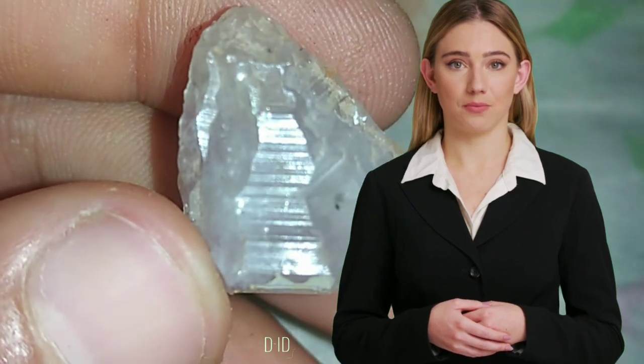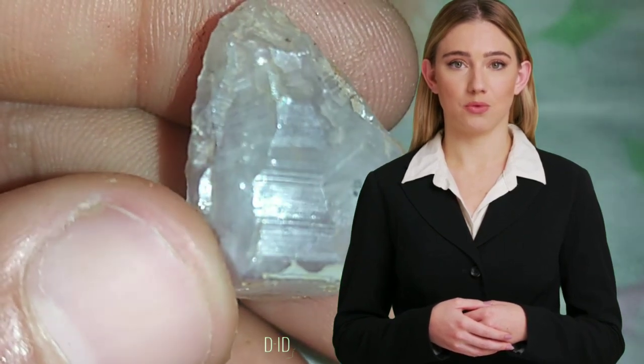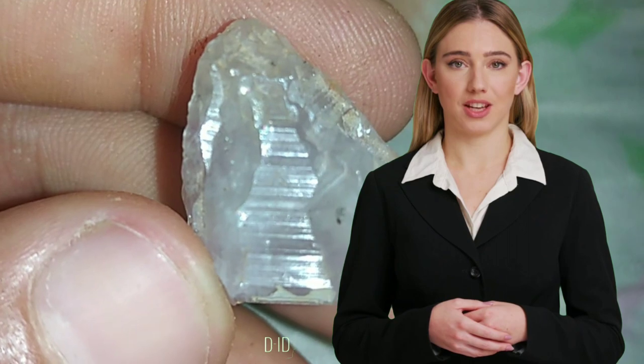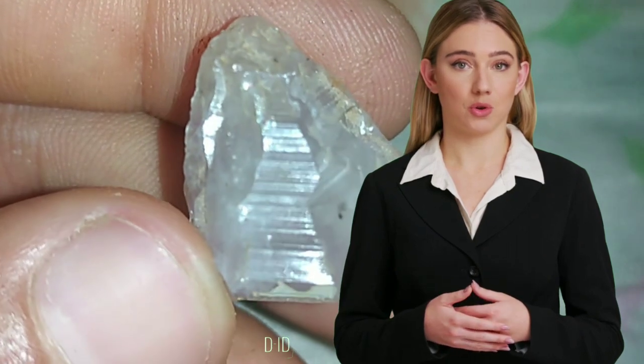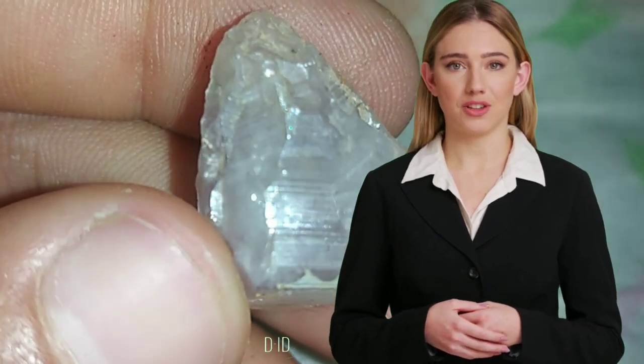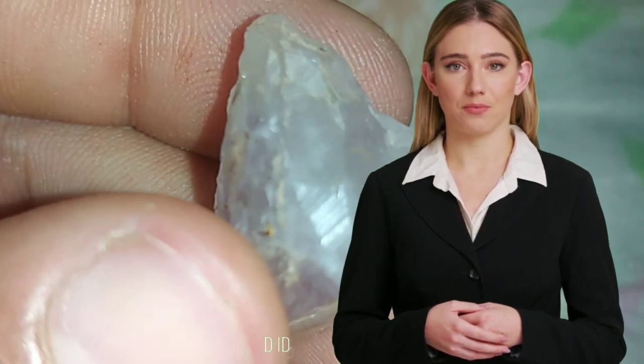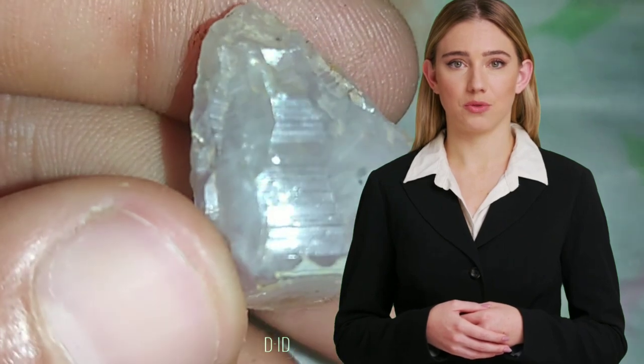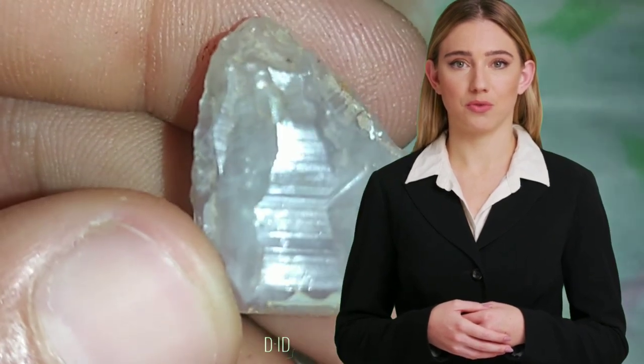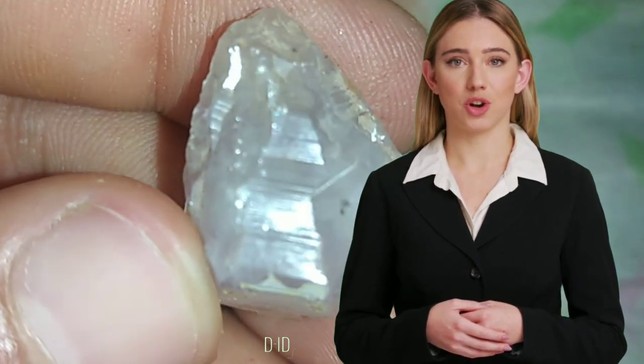Conduct a water test. The water test can help you distinguish a diamond from other imitations like cubic zirconia or moissanite. Fill a glass with water and gently drop the rough diamond into it. Diamonds have high density, so they will sink to the bottom, whereas most imitations will float or show some suspension in the water.